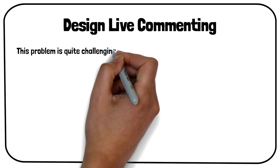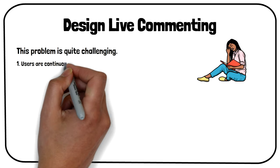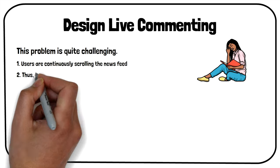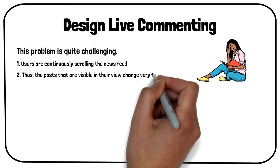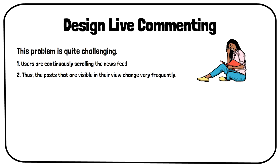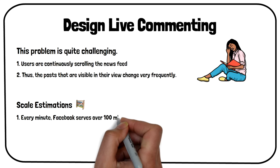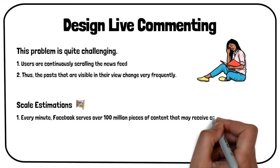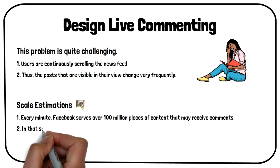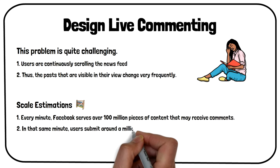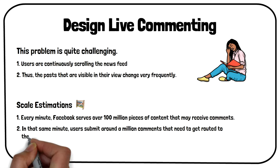This problem is quite challenging, as users are continuously scrolling the news feed and thus the posts visible in their view can change very frequently. To design an efficient system in the interview, we will have to consider the following scale estimations. Every minute, Facebook serves over 100 million pieces of content that may receive comments. In that same minute, users submit around a million comments that need to get routed to the correct viewers.